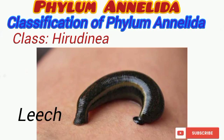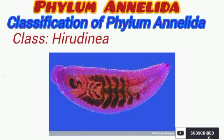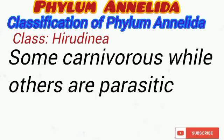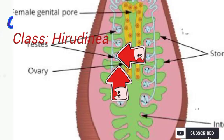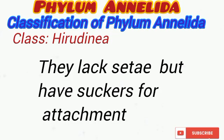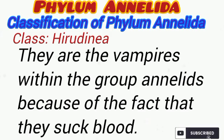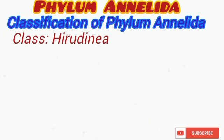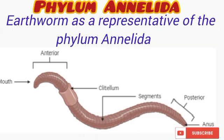The last class of the phylum Annelida is class Hirudinea, commonly known as leeches. They inhabit freshwater predominantly, though there are a few marine species. As seen in the diagram, leeches are dorsoventrally flattened and show a variety of colors. Many are carnivorous while others are parasitic. Leeches are hermaphroditic and possess a clitellum which produces a cocoon for the reception of eggs. They have lost their setae — which oligochaetes use for locomotion — and have developed suckers for attachment while sucking blood. They are regarded as the vampires of Annelida because of their blood-sucking tendency.